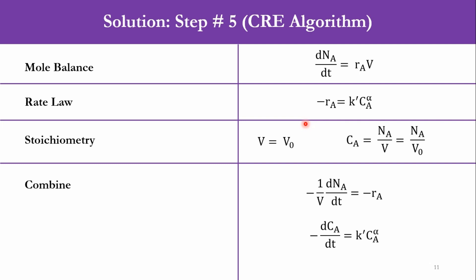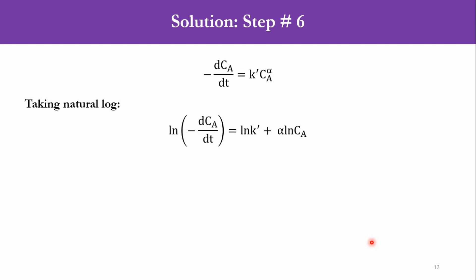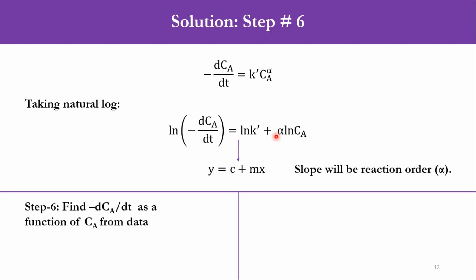We have solved it numerous times and we came to this point: -dC/dt = k'CA^α. Then we took natural log of it and we got the straight line y = c + mx. So we have to draw a plot between natural log of -dC/dt and natural log of CA to get the value of alpha which is the order of the reaction. And accordingly we will be solving it using the numerical method.